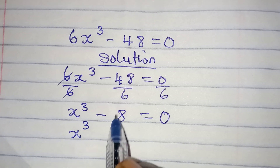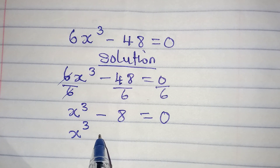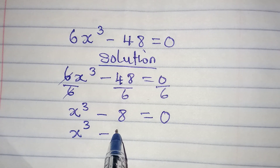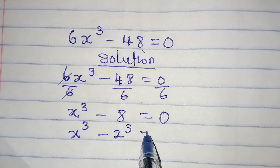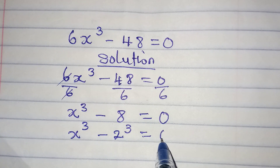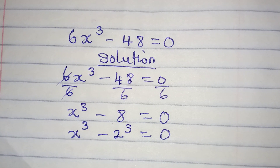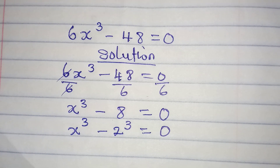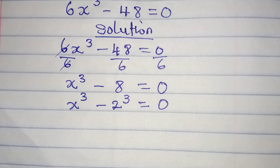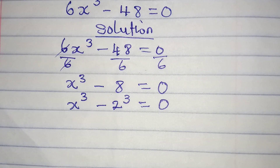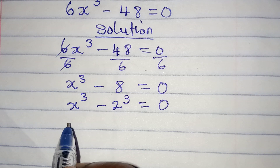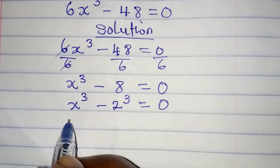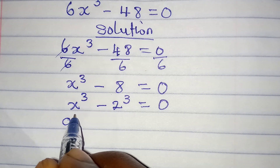From here we have x to the power of 3. Now let's express 8 in index form to get 2 to the power of 3, and this equals 0. Now that we have the same powers, we are going to follow the standard difference of cubes approach.